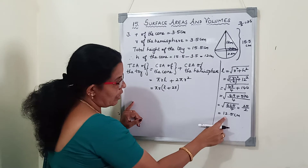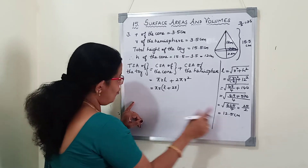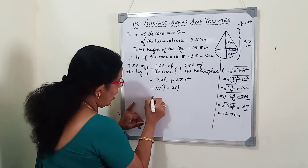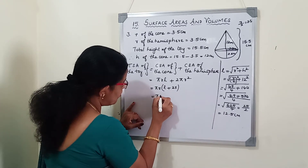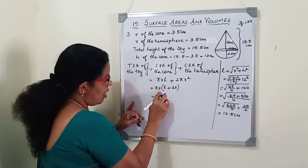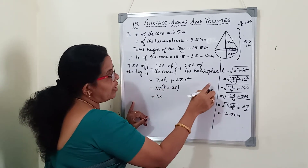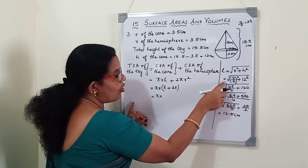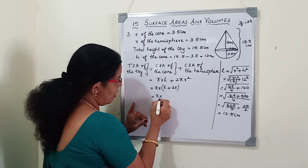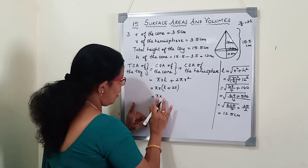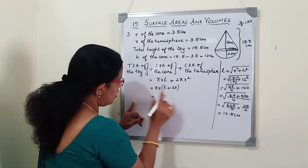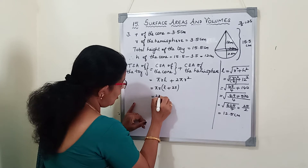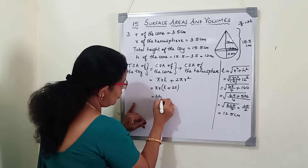So the slant height is 12.5 cm. Now we substitute into πr(l + 2r): π is 22/7, r is 7/2, l is 12.5, and we write 2r as 2×(7/2). Cancelling 7 and 7, and 2 and 22 gives 11.